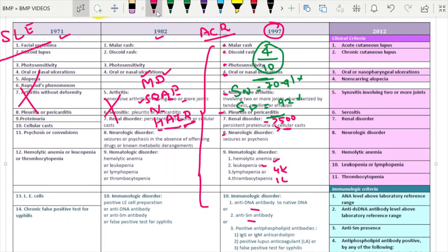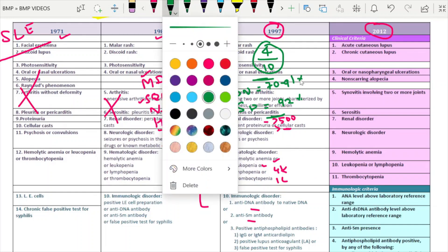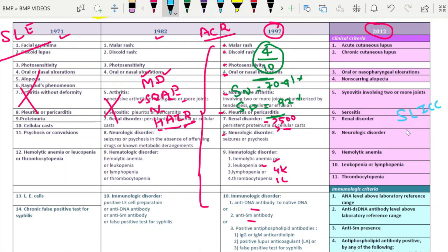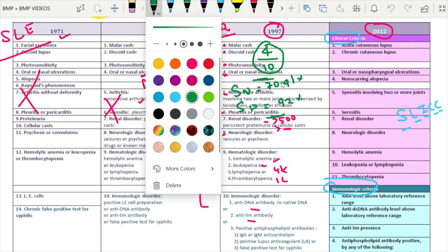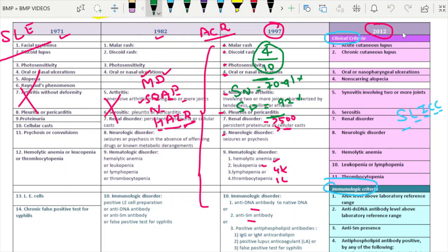Then subsequently, the next criteria which got released in 2012 is the SLICC criteria. SLICC, this is Systemic Lupus International Collaborating Clinic. Here what they have did, they have changed that into clinical criteria and the immunological criteria, they have subdivided. So for the diagnosis here, in this, almost what are the changes in this SLICC criteria is the malar rash and discoid rash have been removed.